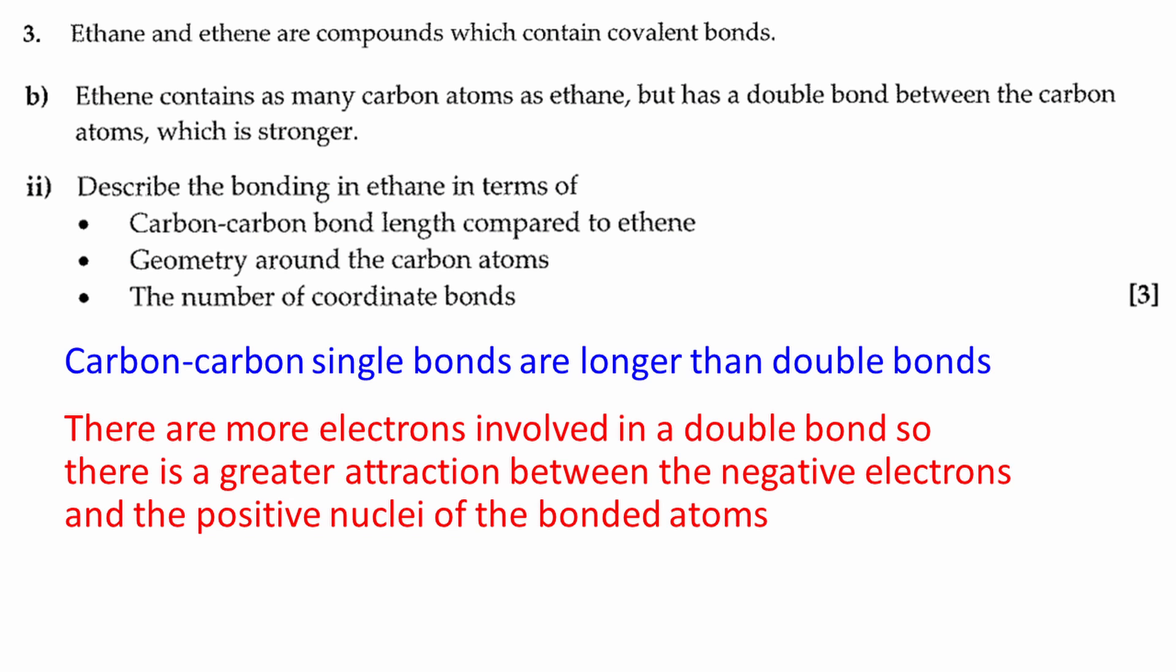Carbon-carbon single bonds are longer than double bonds. We're not required to explain this, but the reason is that there are more electrons involved in a double bond, so there is a greater attraction between the negative electrons and the positive nuclei of the bonded atoms.